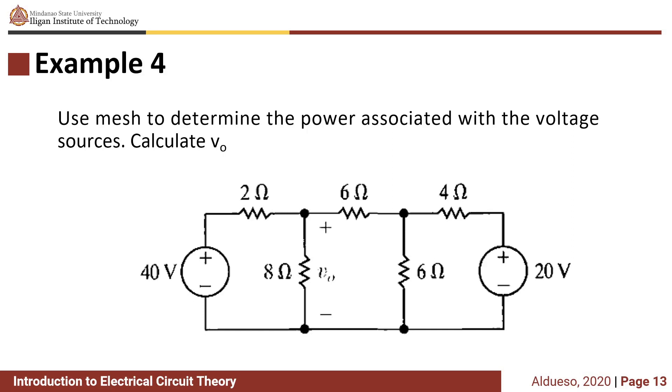Use mesh to determine the power associated with the voltage sources and then calculate Vo. First we need to assign mesh current to each mesh. We have one mesh, we'll label this as mesh Ia, mesh Ib, then mesh Ic.